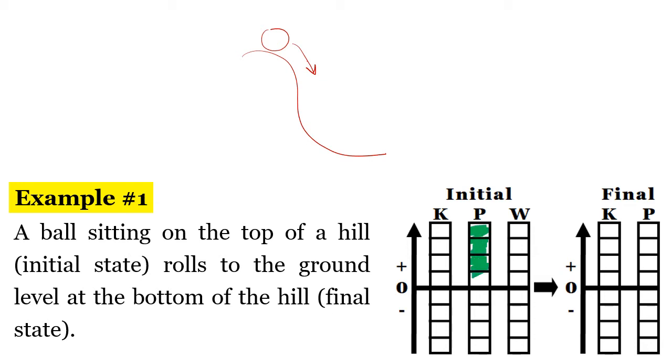So initially we say that we have potential energy. I'm going to go ahead and shade this in. We are maxed out on potential energy because we are at the top of that hill. Now when the ball rolls to the ground that potential energy is converted into kinetic energy. If you look on my bar graph here I shaded four units initially for potential and I shaded four units for kinetic on the final energy. So energy is conserved here. That potential energy is just being converted into kinetic energy.